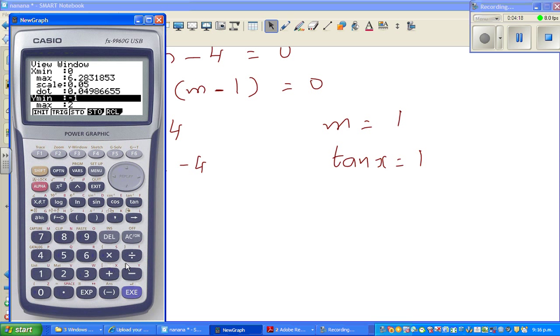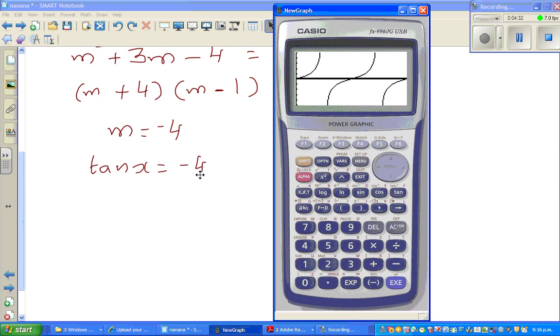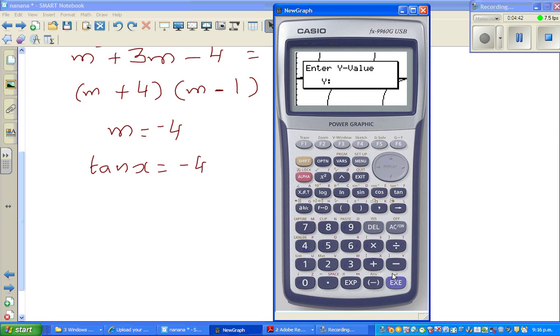So the first part is, we're asking the question, when is tan x negative 4? That means this is your y value, we want to find the x. So g solve, and x calc, when y is negative 4. If this is an excellence question, you need to show how you get this, but you can do it from my other videos. I'm a bit lazy today. So one answer is 1.82.